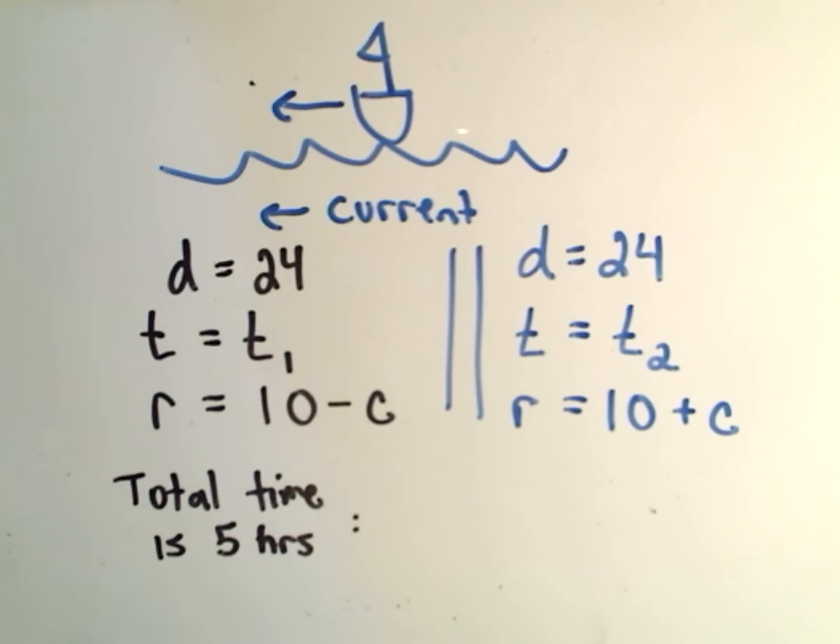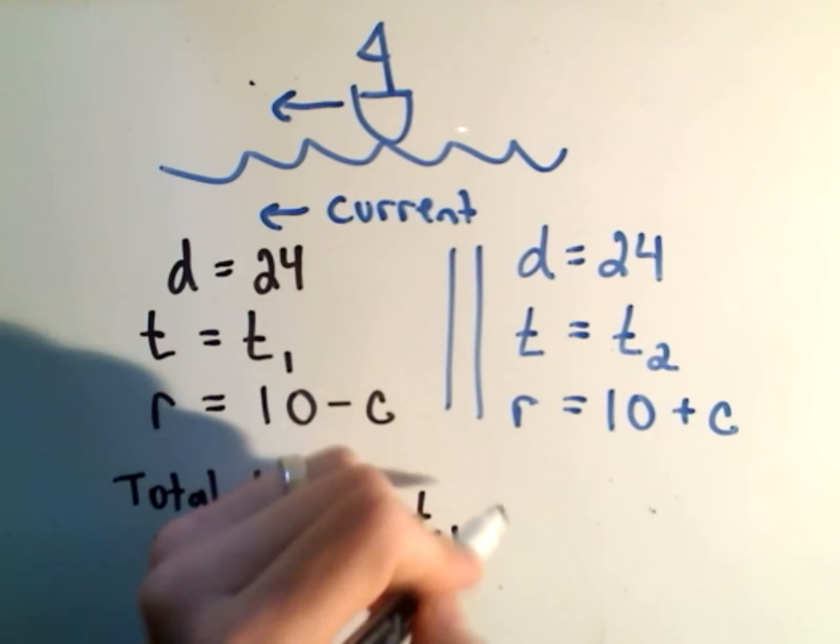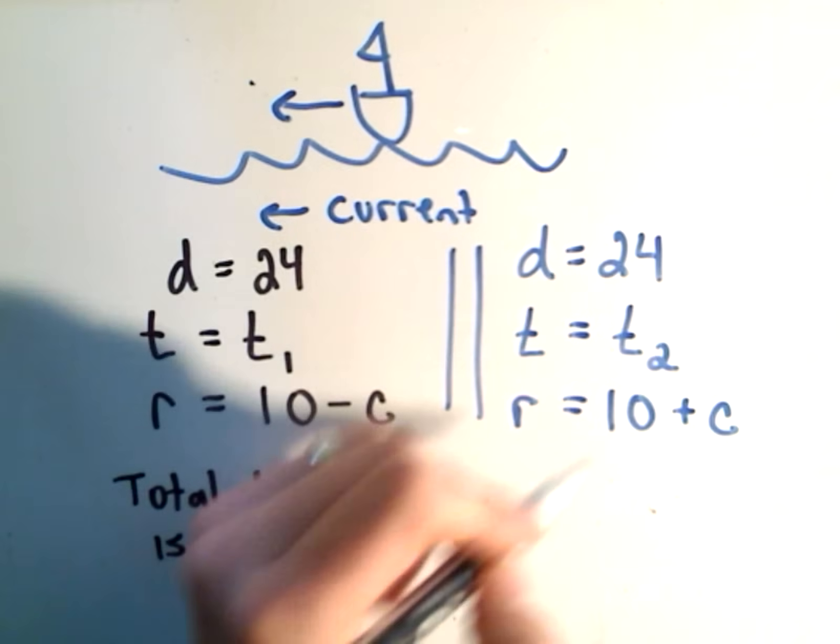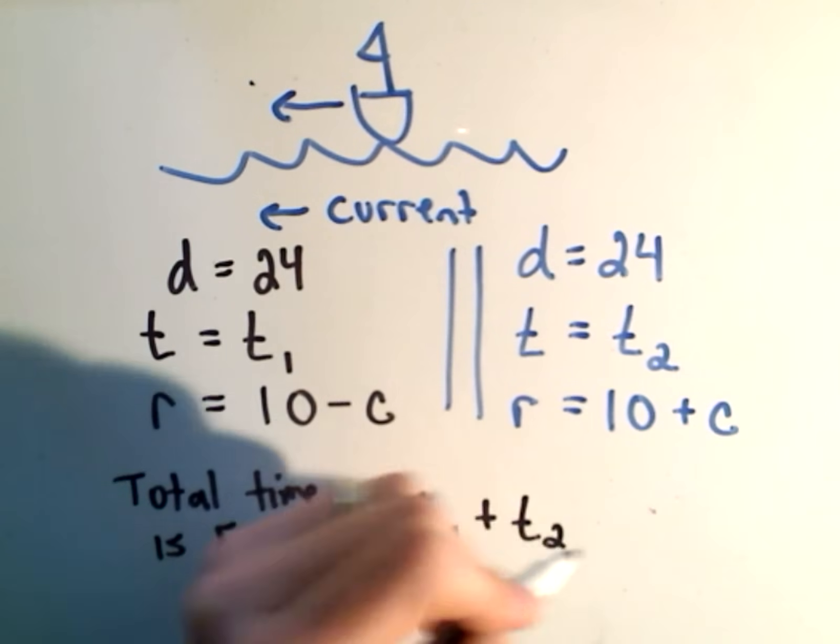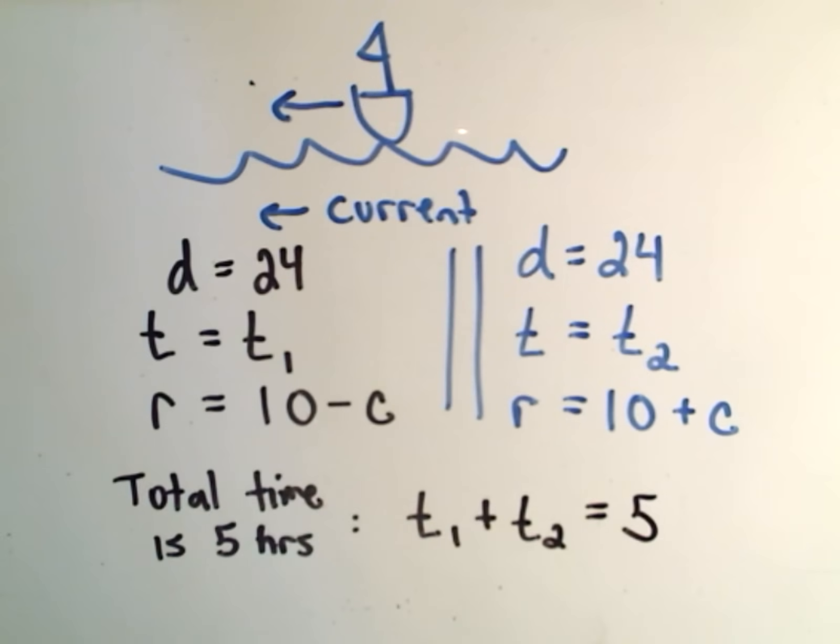Well, we can set that up as an equation by saying, T1, that was the time to go upstream, plus T2, that's the time it takes to go downstream. That'll equal 5 hours.